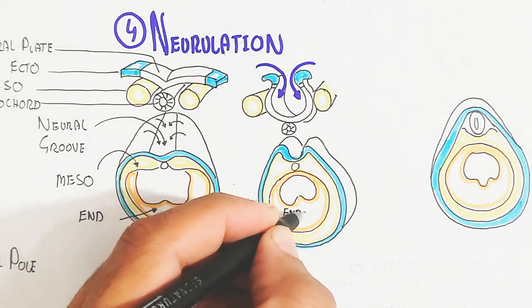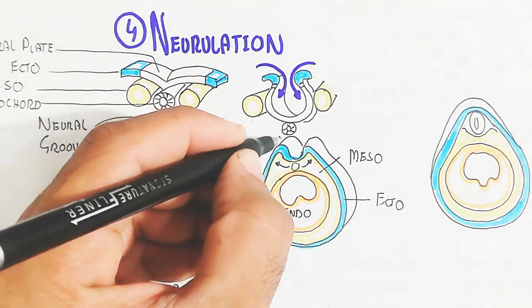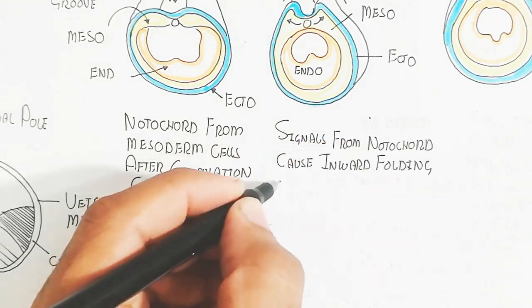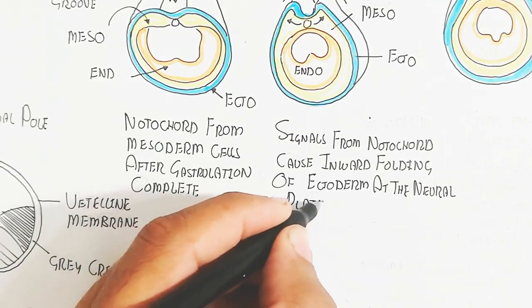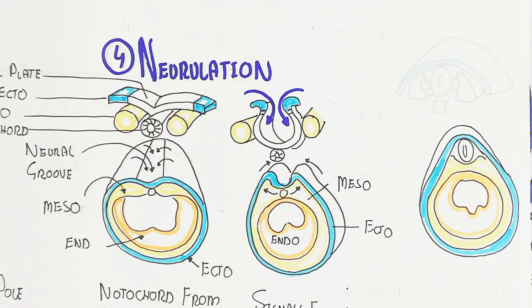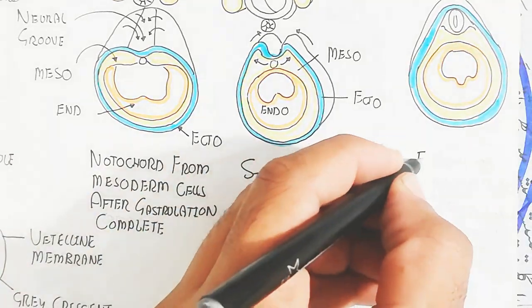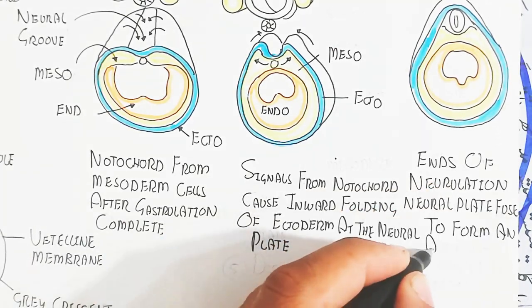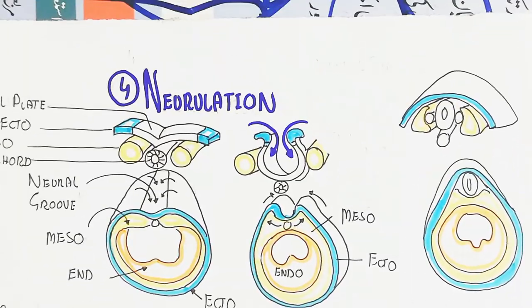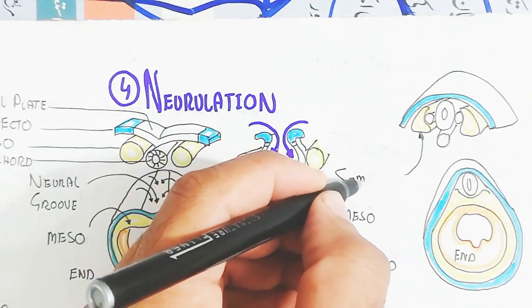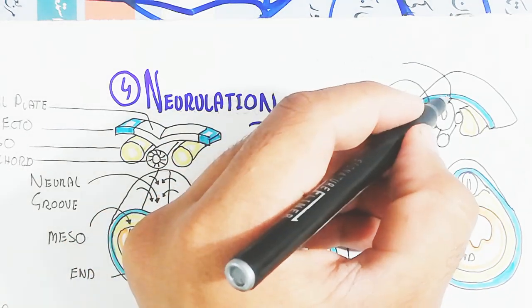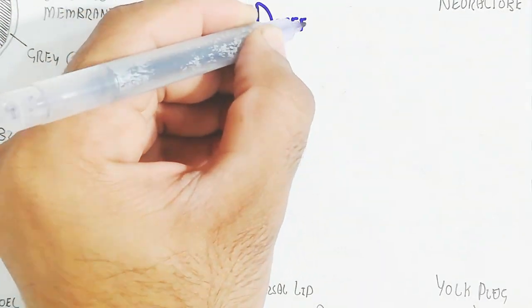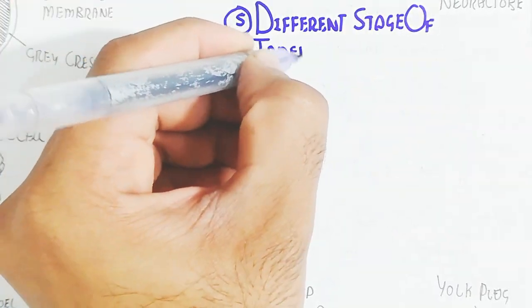The invagination causes the ectoderm to combine together and neural tube formation occurs. This neural tube forms due to the infolding of the ectoderm — the ectoderm detaches, combines together, and forms a neural tube. Signals from the notochord cause inward folding of the ectoderm at the neural plate. At the end of neurulation, the neural plate fuses to form an autonomous neural tube. The somite forms and the spinal ganglion arises from the ectoderm due to neurulation.